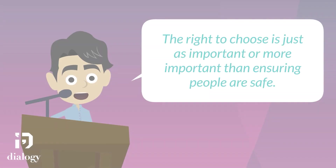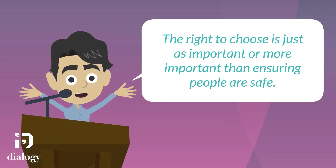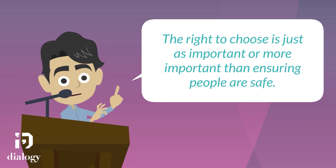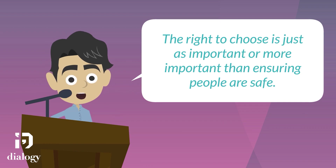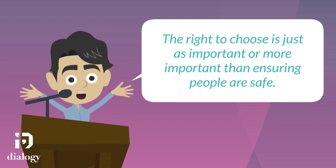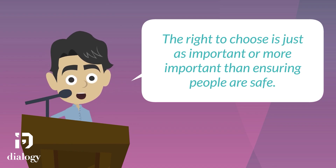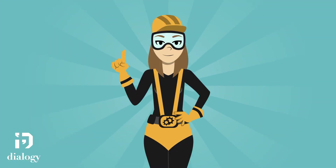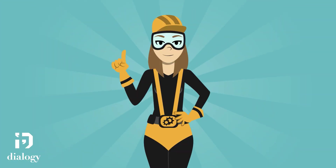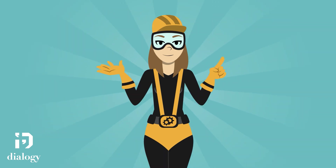The con side can say that the right to choose is just as important — or more important — than ensuring people are safe. The pro then has to argue that violent sports are dangerous and why people should not have the right to choose to do dangerous things. Deciding whether a particular side will focus more on principle or practical is an excellent way to approach any debate and should be a priority when preparing for any topic.